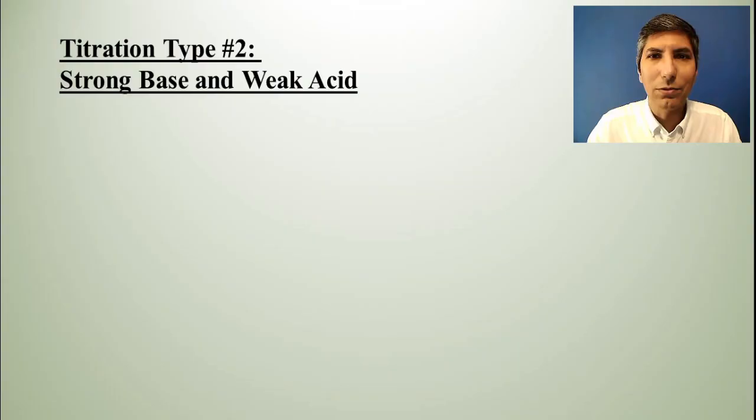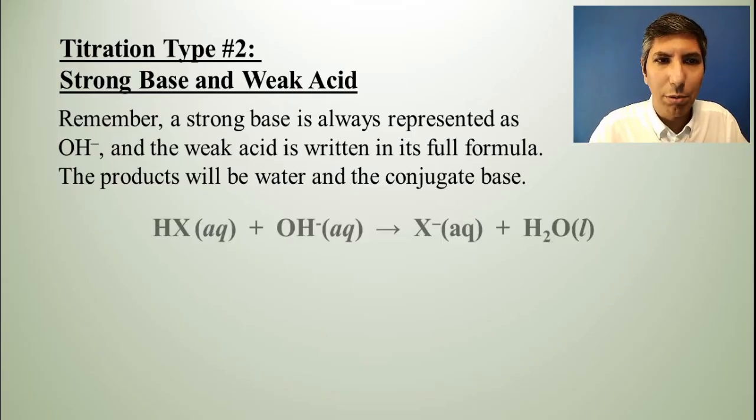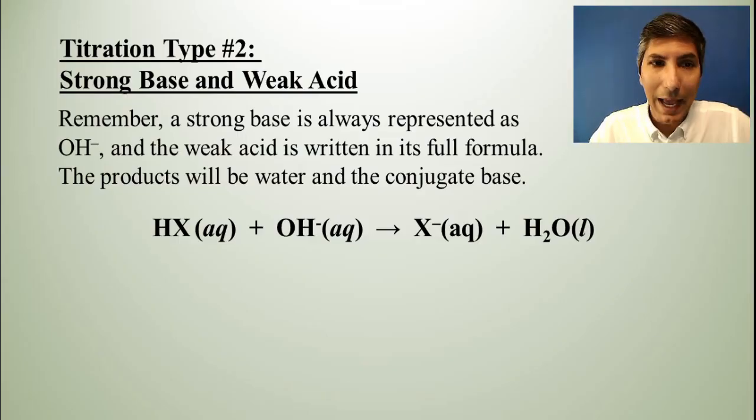We're going to look at strong bases being reacted with weak acids. Now, we talked a little bit about this type of reaction in Section 4, but remember that a strong base is always going to be represented as hydroxide ions, and a weak acid, since it doesn't dissociate very much, is going to be written as its full formula, and your products are going to be water and the conjugate base of the acid, so this is what that would look like.